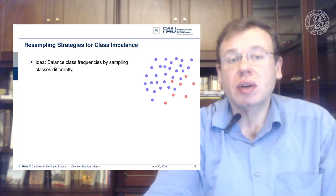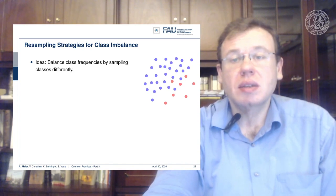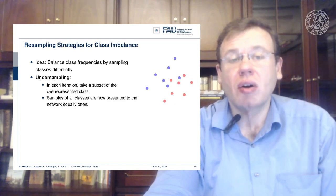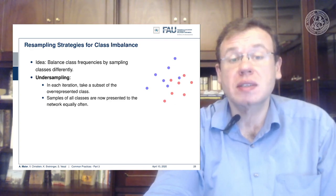One thing you can do is resampling. The idea is that you balance the class frequencies by sampling classes differently. You can undersample, which means throwing away a lot of the training data from the most frequent classes, and this way you train a classifier that is balanced towards both classes.